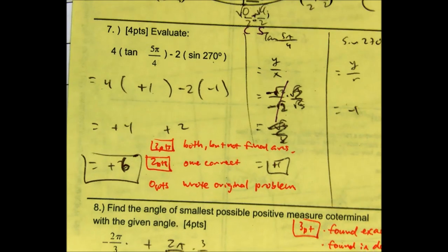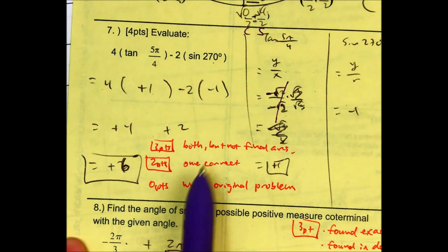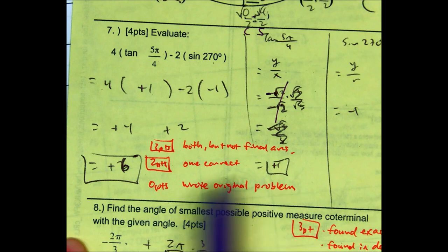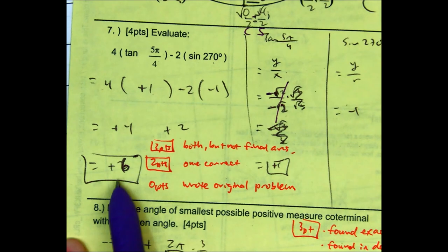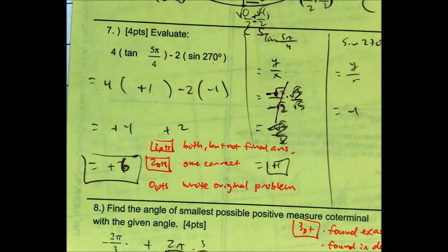If you got at least one of these correct, I gave you 2 points. You got 0 points if you wrote the original problem. You got 3 points if you got both of these correct, but you did not get 6. Just look at your order of operations there.